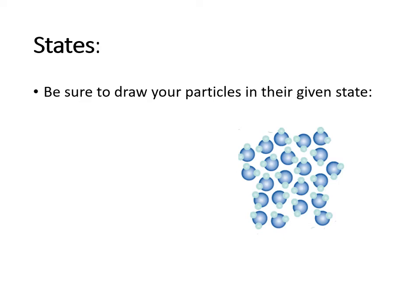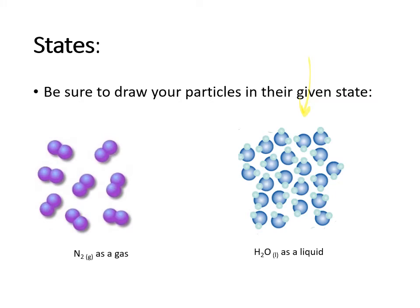When you're communicating the state of a substance, if you can draw out that state you can very quickly communicate the differences between the different states. You want to make sure that if you're talking about your particles being in a particular state, you draw them in a way that reflects that state. For example, the difference between a gas and a liquid is that gas particles have room to move around, so there should be spaces between those particles.